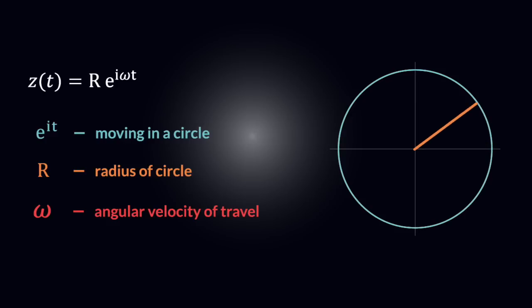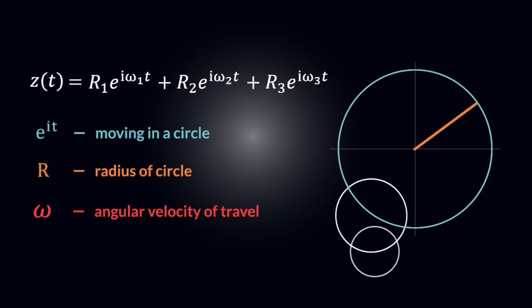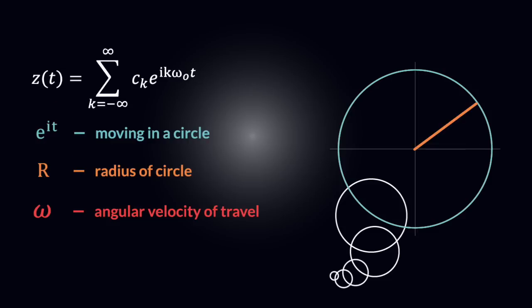Representing circles rotating on circles is simply adding up more of these terms. When we add more and more, reaching an infinite number of circles, we now have what is called the Fourier series of the orbit.